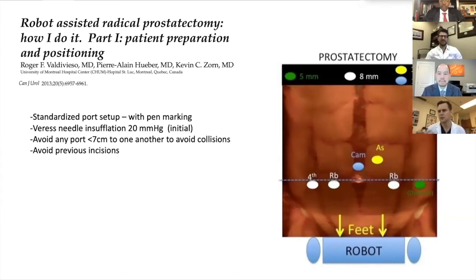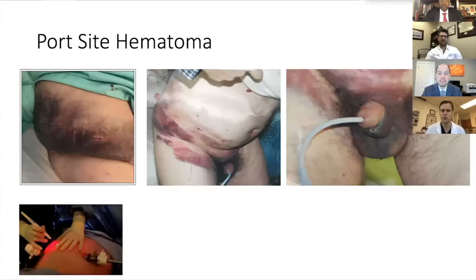I like to start with a Veress needle — Dr. Goff provided a nice demonstration of that. I usually insufflate to 20 millimeters of mercury, giving some pressure on the abdomen so you can place the trocars easily. Back in the day, we used to transilluminate, especially in obese patients. I'm sure everyone on this call has had patients who've had good outcomes where we did great surgery, but they show these pictures postoperatively — they have some hematomas, which we know won't require transfusion but is an unsightly thing that causes some distress.